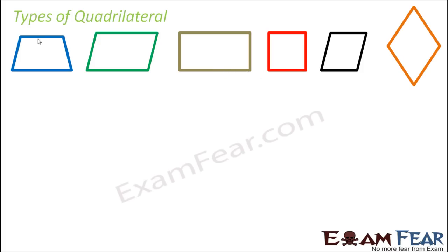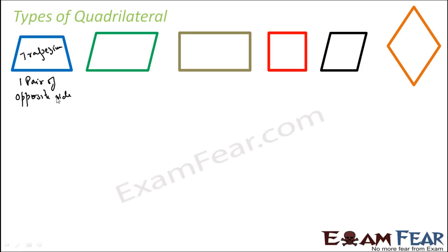This particular figure is called a trapezium. In this case, one pair of opposite sides of a quadrilateral is parallel — only one pair. One pair of opposite sides is parallel — that is trapezium.